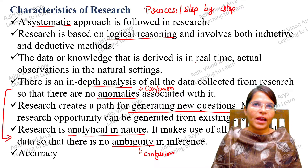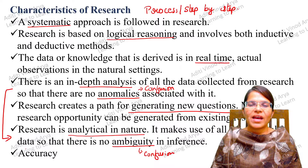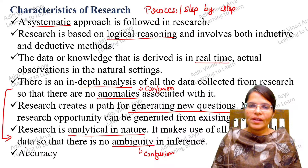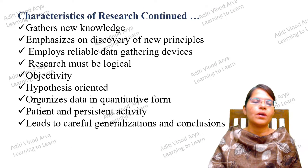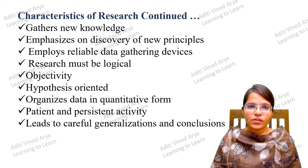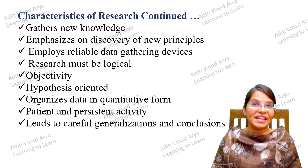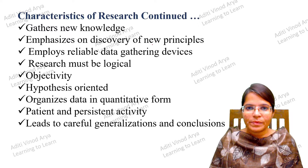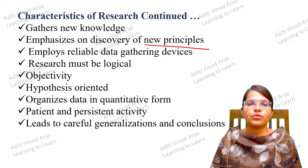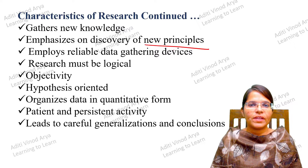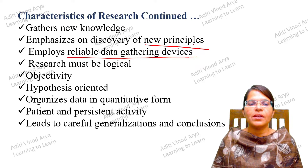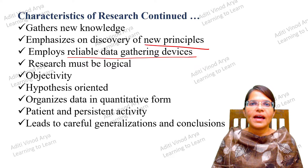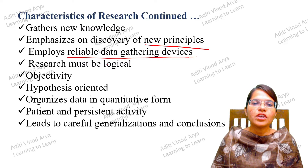Accuracy is essential — the data should be very, very accurate with no mistakes. Research gathers new knowledge: because of research you get new and updated knowledge. There is an emphasis on the discovery of new principles, new theories, and new laws. Research also employs reliable data gathering services — whatever data you're gathering, you should use a reliable method rather than taking data randomly.